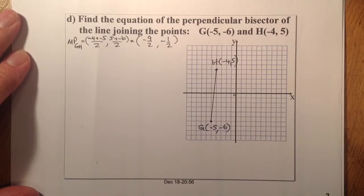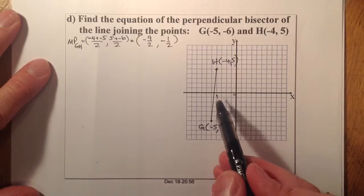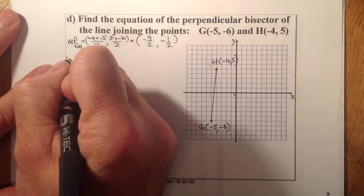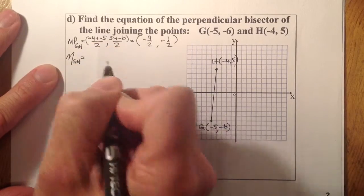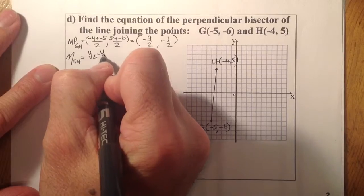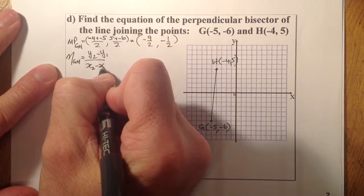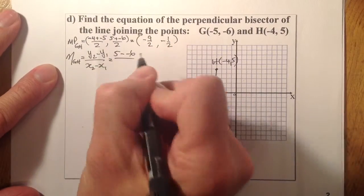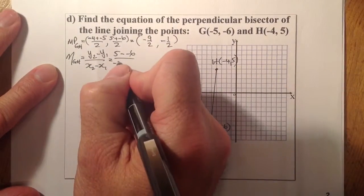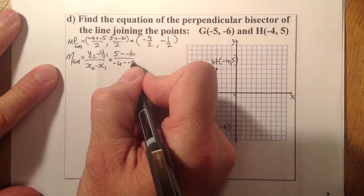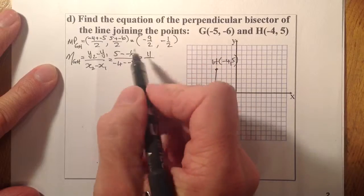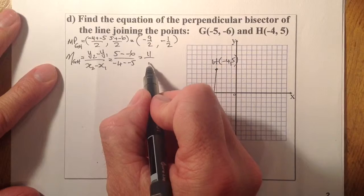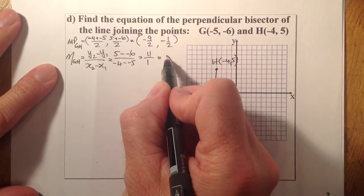From there, let's work out the gradient of GH. Using the formula: 5 minus minus 6 on top gives 11, and minus 4 minus minus 5 on the bottom gives minus 4 plus 5 equals 1. So the gradient of GH is 11.